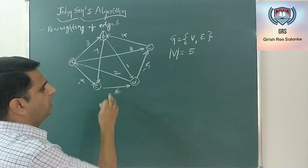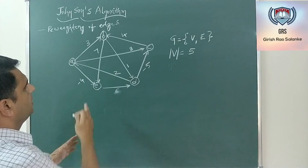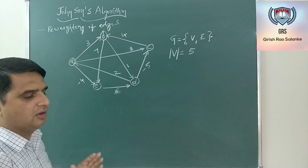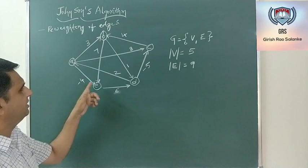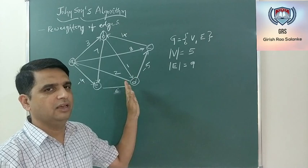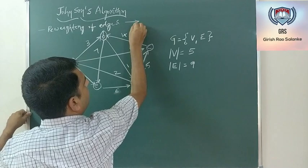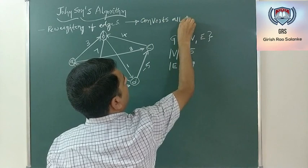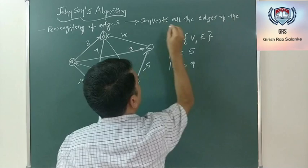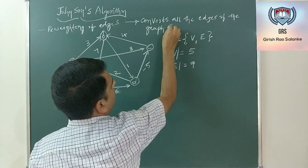Out of these 9 edges, some edges have negative weight. So if we directly run Dijkstra's algorithm on this, it fails because Dijkstra's cannot work on negative edges. What we mean by reweighting the edges is: with the help of reweighting, this graph converts all the edges of graph G into positive edges.